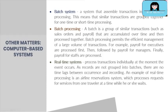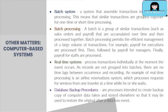Examples of real-time processing systems are reservation of airline tickets and movie tickets. Finally, we have database backup procedures. These are processes intended to create a backup copy of computer data, which is stored elsewhere. This backup is an internal control that can be used to restore the original data after a data loss event.